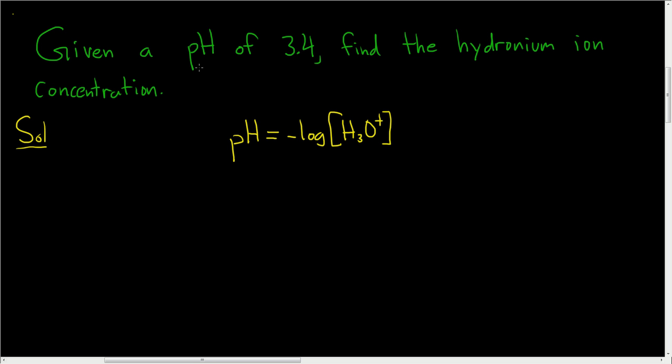In this problem, we're given the pH of 3.4. So all you do is plug in 3.4 and solve for the hydronium ion concentration. So we have negative log of the hydronium ion concentration.